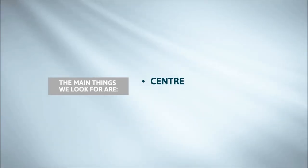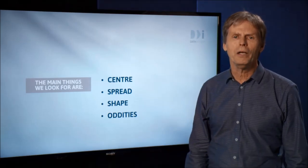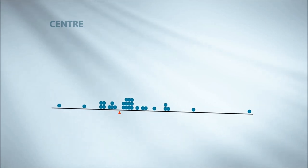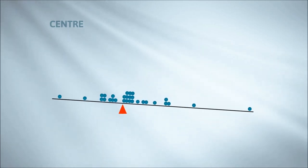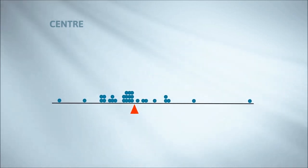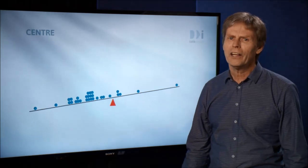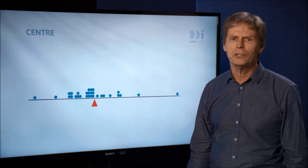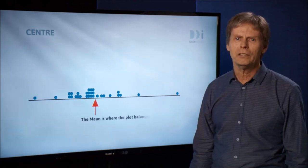Here are the main things we look for in dot plots: center, spread, shape, and oddities. We'll start by looking at center. One way to think about the idea of center is the point of balance, where the dot plot balances. It turns out that the balance point is the ordinary everyday average, what statisticians call the mean. If you're looking at a graph and wondering where the mean is, you should ask yourself, where would this balance?